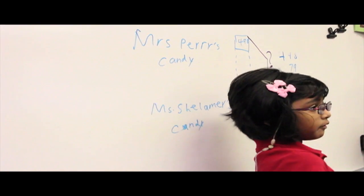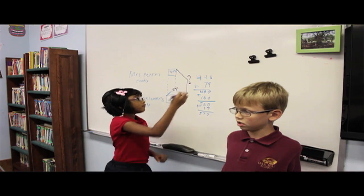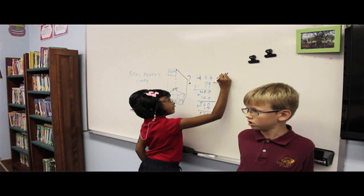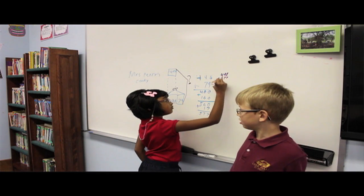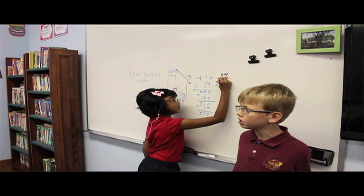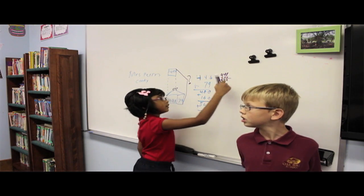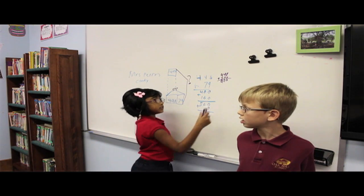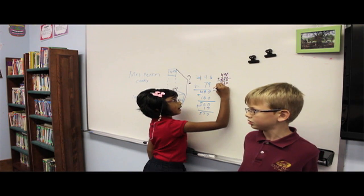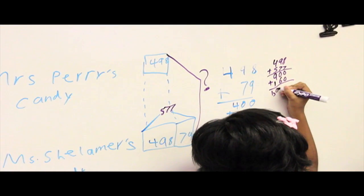Then we use the computation. 498 plus 577. 400s plus 500s equals 900. Value 900. 9 tenths plus 7 tenths equals 16 tenths. Value 160. Mental math 1060.